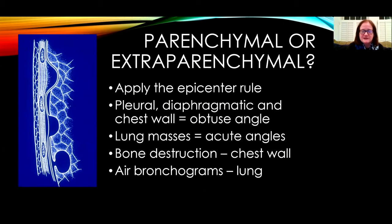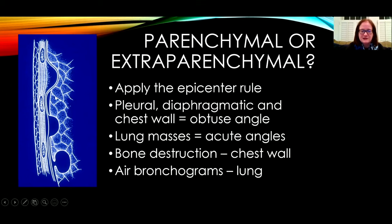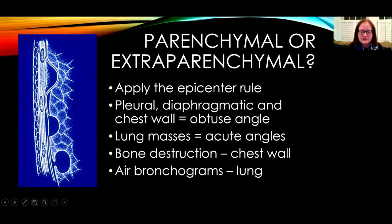One of the rules we use to determine if something is arising in the lung or outside the lung is the epicenter rule. Extraparenchymal is a word for outside the lung, chest, or pleura. Here are three lesions in this diagram. The uppermost lesion has obtuse or large angles with the chest wall, indicating it's extraparenchymal, arising from the chest wall or pleura. The lesion on the bottom makes an acute, less than 90-degree angle with the chest wall, indicating that it arises in the lung.